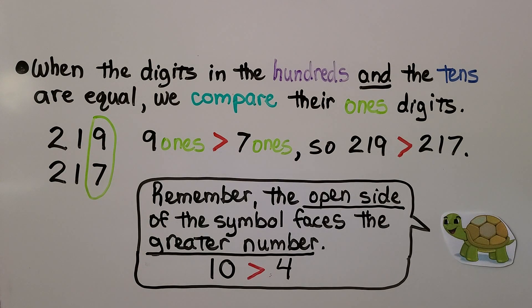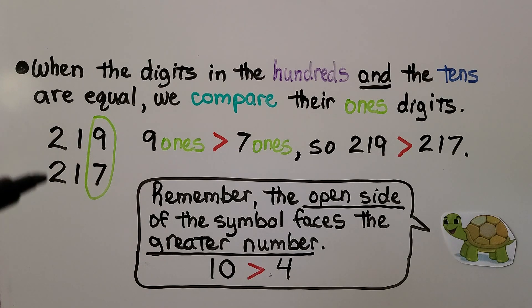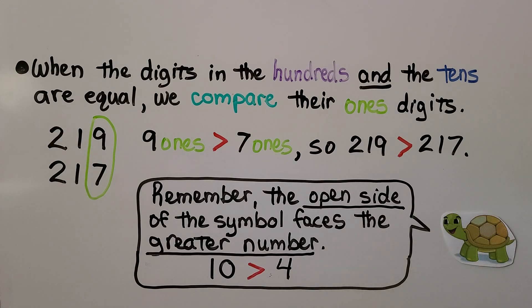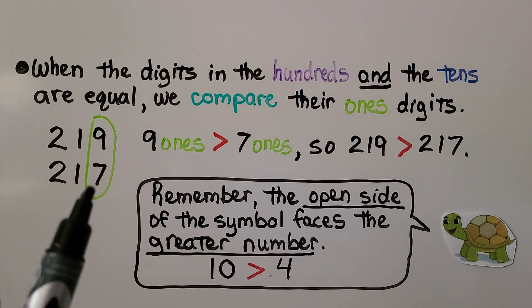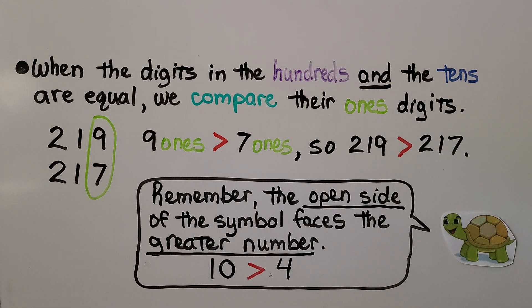When the digits in the hundreds and the tens are equal, we compare their ones digit. We have a 2 in the hundreds place for both numbers, and a 1 in the tens place for both numbers, so we compare the ones place. 9 ones is greater than 7 ones, so 219 is greater than 217.